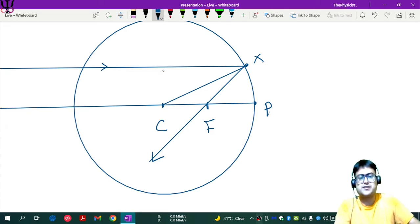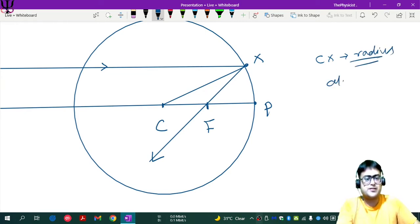So now this is the incident ray. After reflection, it has passed through the focus. Now, C is the center of curvature. So CX is basically what? The radius of the sphere, which is always normal to the spherical surface.